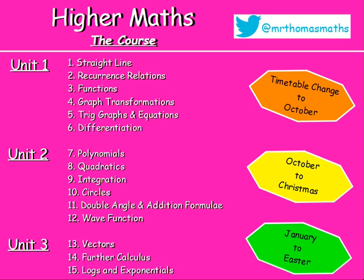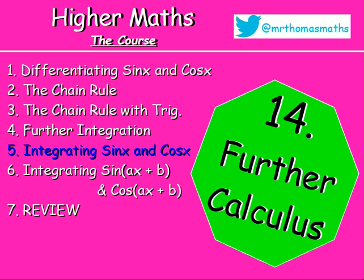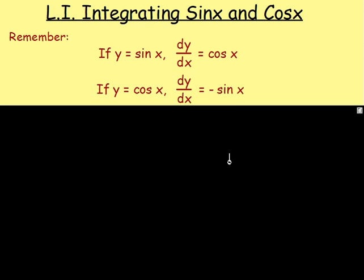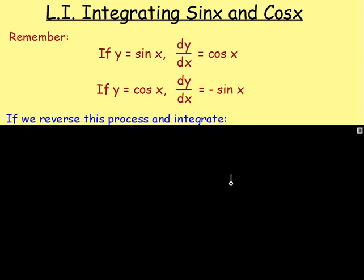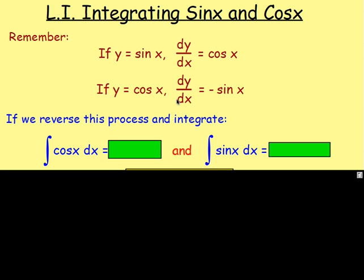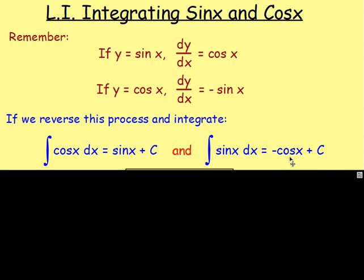Let's go with chapter 14, lesson 5: integrating sin(x) and cos(x). A few lessons ago we were differentiating both sin(x) and cos(x). If you differentiate sin(x) you get cos(x), and if you differentiate cos(x) you get negative sin(x). Now we're going to reverse this process and integrate both. Integrating cos(x) gives us back sin(x) — remember the plus C. And integrating positive sin(x) gives us negative cos(x) plus C.